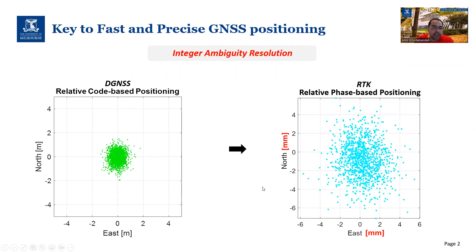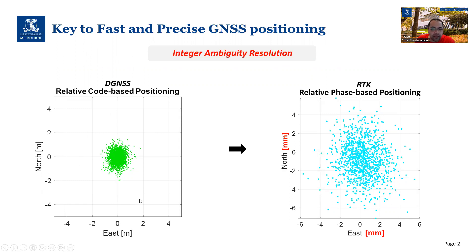In the context of GNSS, it is quite well known that integer ambiguity resolution is key to fast and precise positioning, as also indicated by the positioning scatter plots on this slide. Integer ambiguity resolution enables us to switch from code-based meter-level positioning, shown on the left-hand side, to phase-based millimeter to sub-centimeter level positioning, shown on the right-hand side.